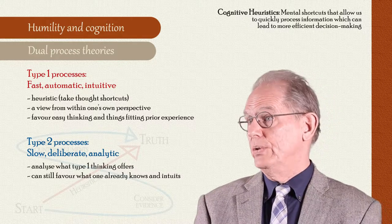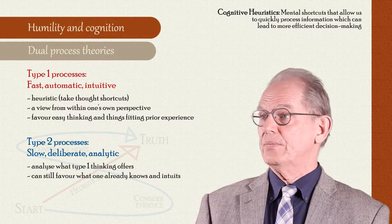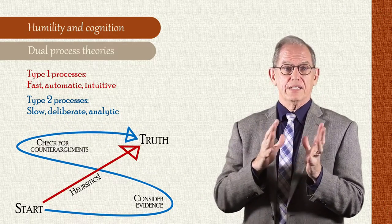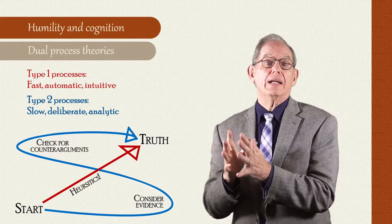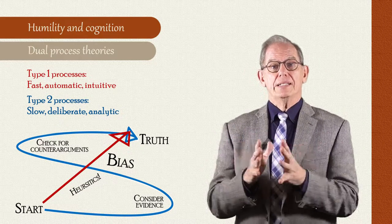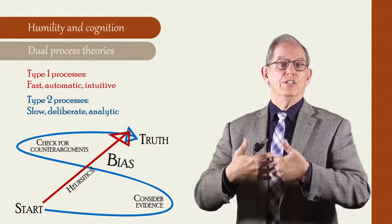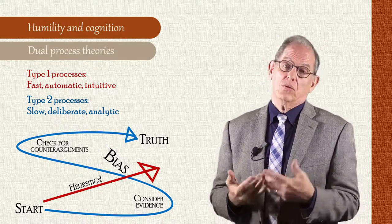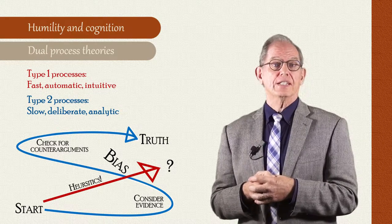While in many instances this self-reliant Type 1 thinking is adequate, problems and biases arise when reliance on what one knows and intuits does not provide enough information or the right kind of information for the task, which in turn produces biased judgments.